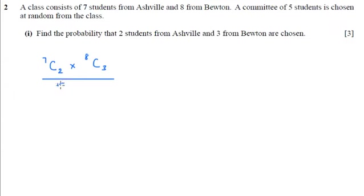We've got 15 people to choose from in total, if we didn't mind if they came from Asheville or Bewton, and we need to choose five people. So that's divided by 15C5.